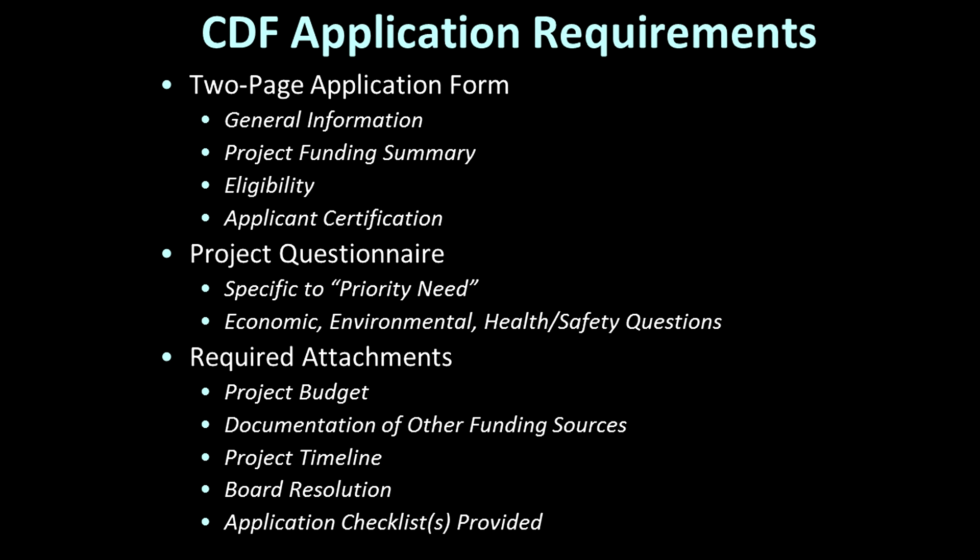Next, there are five different questionnaires included in the packet, one for each priority need. We ask that you fill out the project questionnaire that corresponds to the priority need your project will address. Here we're looking for information about whether your project is a collaborative effort with other organizations, its economic and environmental impacts, as well as how it might help improve the health and safety of our residents. If your project involves real estate development, we're also looking to see what form of site control you have and whether the necessary zoning is in place.